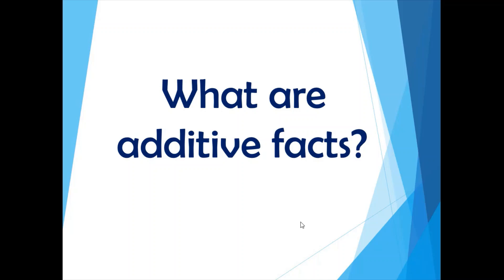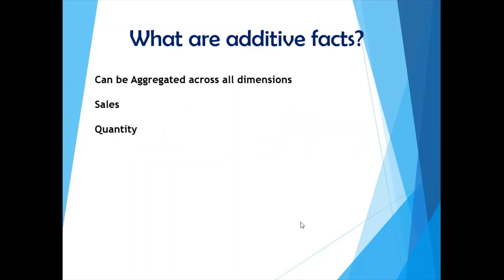Moving on to the next question: what are additive facts? Fact tables contain measures, and we'll look at three kinds of measures. Additive facts, as the name suggests, are measures in a fact table that can be aggregated — they can be added across all the dimensions that the fact is linked to.